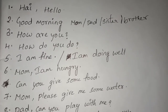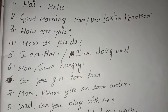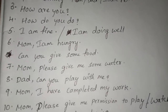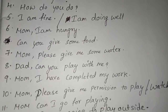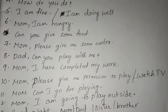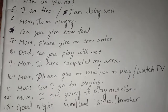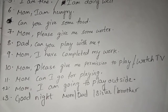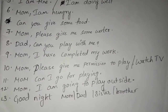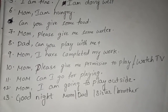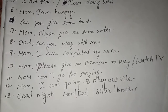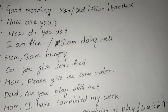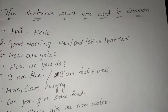The next sentence: Mom, I am hungry — can you give some food? Mom, please give me some water. Dad, can you play with me? Mom, I have completed my work. Mom, please give me permission to play. Or: Mom, please give me permission to watch TV. Mom, can I go for playing? Mom, I am going to play outside. Good night mom, good night dad, good night sister, good night brother. These are the simple sentences which you can use in our daily life.